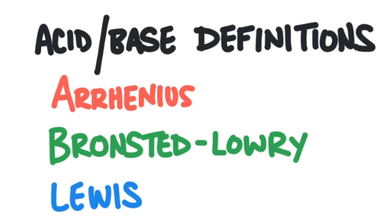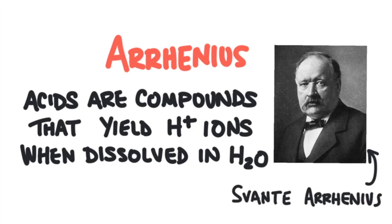There are three ways to define acids and bases. The first definition is quite narrow, while later definitions expanded to include new experimental evidence. The first definition is called the Arrhenius Acid-Base Definition, named after a Swedish scientist. This was the earliest definition, from 1884.